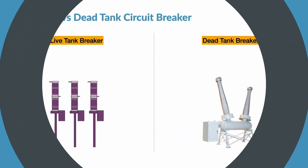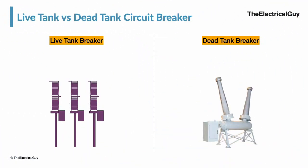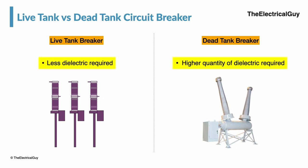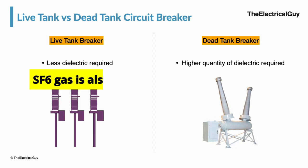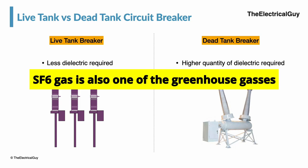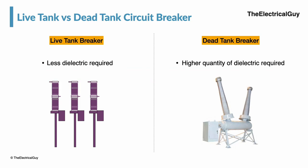It is important to note that in a dead tank circuit breaker, the quantity of dielectric required is more than in the live tank breaker. If SF6 gas is used as the dielectric medium, a dead tank breaker would need more gas than the live tank breaker. Since SF6 gas is also a greenhouse gas, in case of leakage, a dead tank circuit breaker would cause more damage to the environment than the live tank breaker.